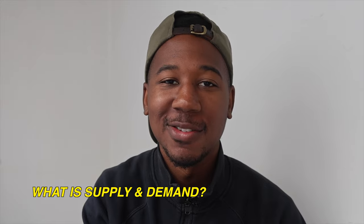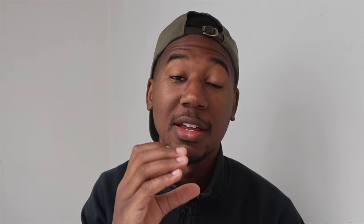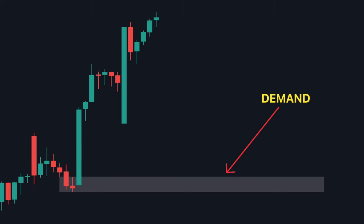So what is supply and demand? Supply and demand is very similar to support and resistance, but instead of supply and demand being walls — kind of like support and resistance — they're going to be zones. Supply is going to be an aggressive selling zone and demand is going to be an aggressive buying zone.